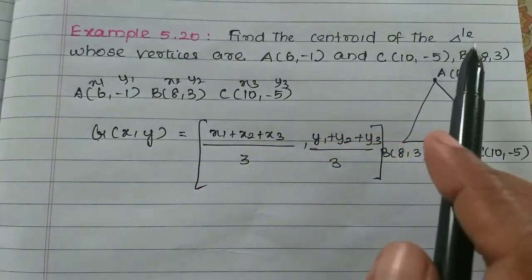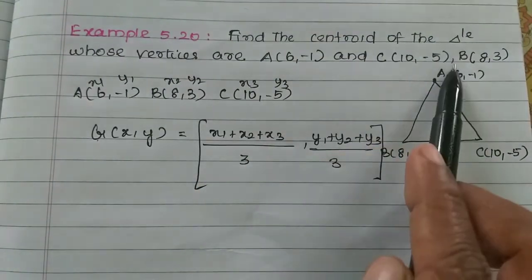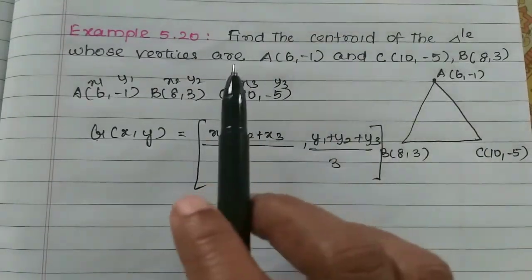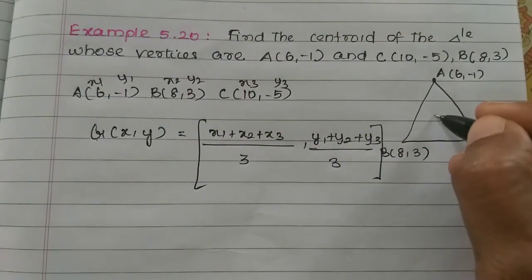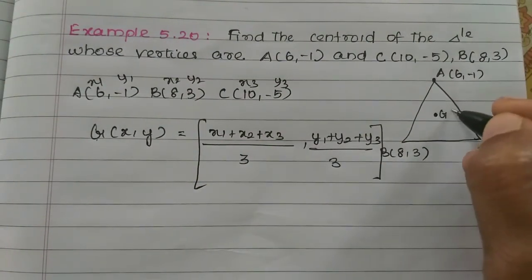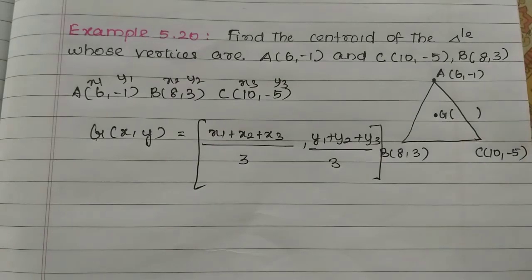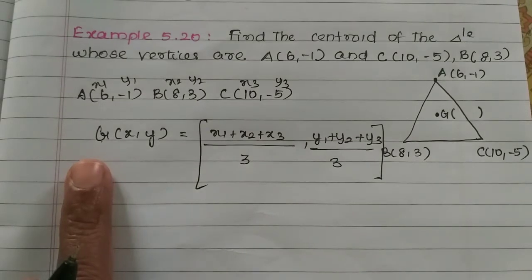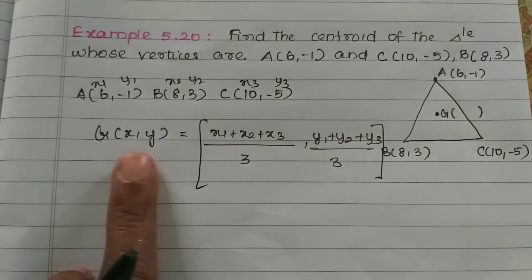Find the centroid of the triangle whose vertices are A, B, and C. The centroid of the triangle is G. We are going to find its coordinates.